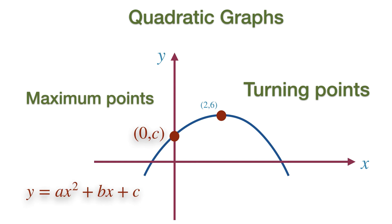The graph will be symmetrical about these turning points, and the equation of the line of symmetry, in this case, is X equal to 2, as the vertical line passes through the 2 on the X axis.